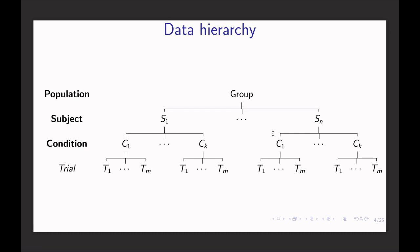At the population level, we need to think about the data hierarchical structure. At the top level, we have the population — sometimes multiple groups. Under that, we have a list of subjects. For each subject, usually we have multiple conditions, and each condition usually has multiple trials. When we build a model, how do we incorporate this hierarchical structure at the population level?